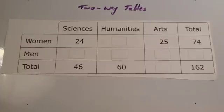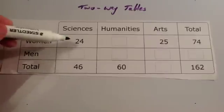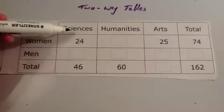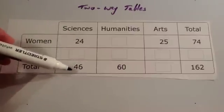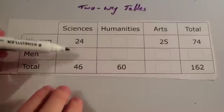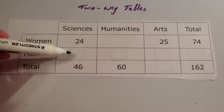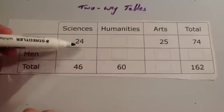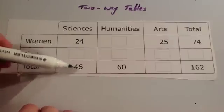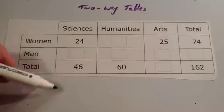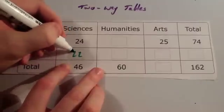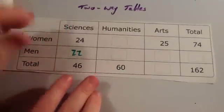For instance, if you have a look here, the total number of people studying sciences is 46 and 24 are female. That means the remainder need to be male. So if you do 46 take away 24, you'll find the number of men. If you work that out using the column method, you'll get 22. That means there are 22 males studying sciences.